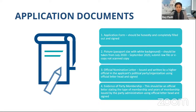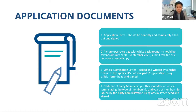Fourth is evidence of party membership — any evidence such as a letter from your party or organization, or a photocopy or scanned copy of your membership ID. Be sure that whatever membership evidence you provide is not expired, meaning you are an active member of your organization or political party at the time of application.